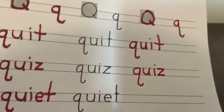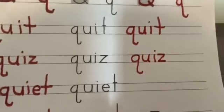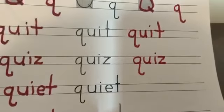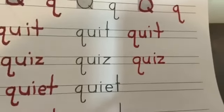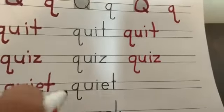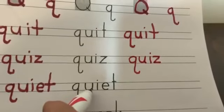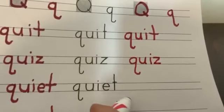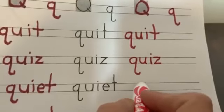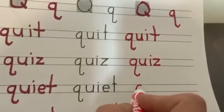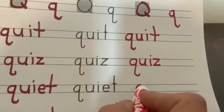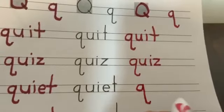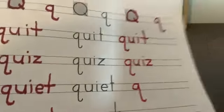Next word is quiet. Sometimes we have to be quiet. Q-U-I-E-T. Q: magic C, go up like a helicopter, slide down, down, down, and U-turn. Good job!